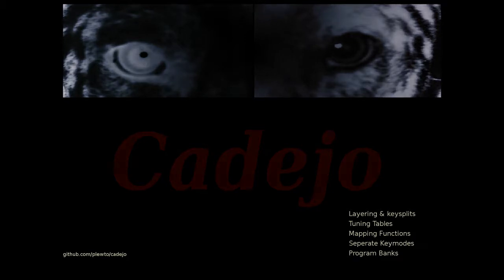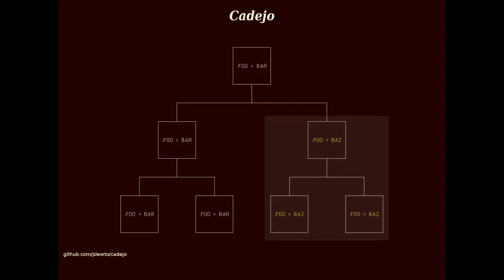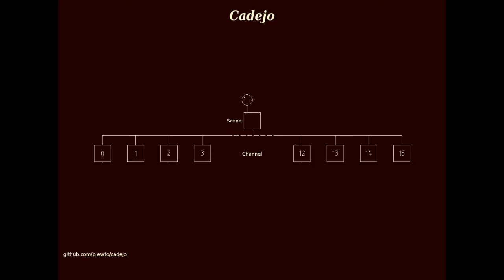As an organizing principle, Cadeo uses a hierarchical tree structure. Each node on a Cadeo tree has a set of properties in the form of key-value pairs, and a node automatically inherits the properties of its parent. If a node defines the same property as one of its ancestors, the local value takes precedence. At the root of each Cadeo tree is a scene, which is connected to a single MIDI device. Each scene has child nodes corresponding to the 16 MIDI channels, each channel having zero or more child nodes called performances. A performance may be viewed as a container holding the various components which define an Overtone instrument, and also contains a key-node object and a program bank.